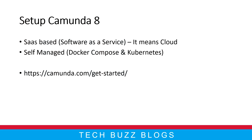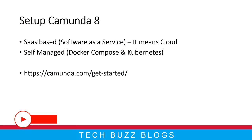Hi guys, welcome back. In this video we are going to cover how to set up our first project in Camunda 8 using SaaS - Software as a Service. Camunda 8 provides two ways to set up your project: one is SaaS-based and another is self-managed. In the last video we covered how to create a SaaS account and how to get the properties files. In this video, we'll utilize that account and those properties files to create our first Spring Boot application and deploy a small BPMN file with a user task into the cloud.